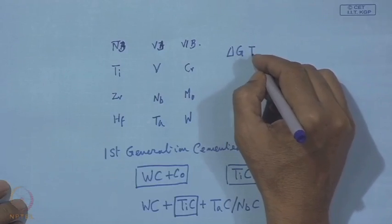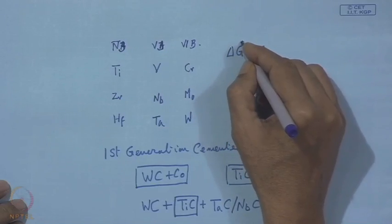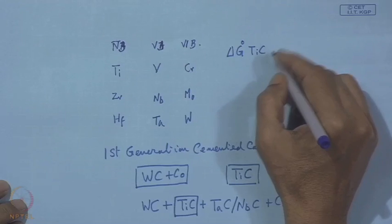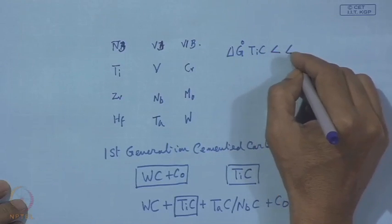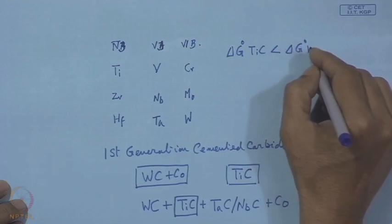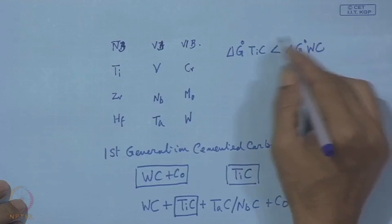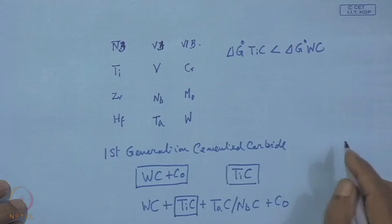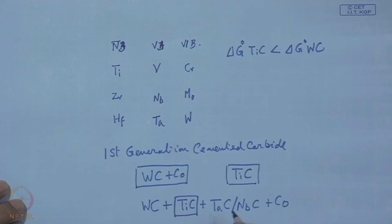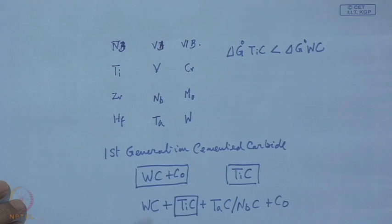Moreover, TiC has improved chemical stability in comparison to tungsten carbide. If we look into the free energy data, we find that ΔG⁰ of TiC is more negative than ΔG⁰ of tungsten carbide. So we find some valid reason why TiC comes into this mixture as one of the very strategic compounds to make this cutting tool much more efficient.